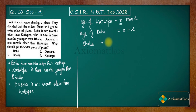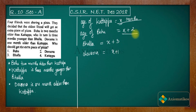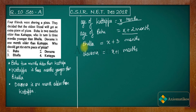Katappa is three months younger than Bhalla, which means when you add three to Katappa's age you get Bhalla's age: X plus 3. Devsena is one month older than Katappa, so the age of Devsena will be X plus 1. To summarize: age of Katappa is X months, age of Bahu is X plus 2 months, age of Bhalla is X plus 3 months, and age of Devsena is X plus 1 month.